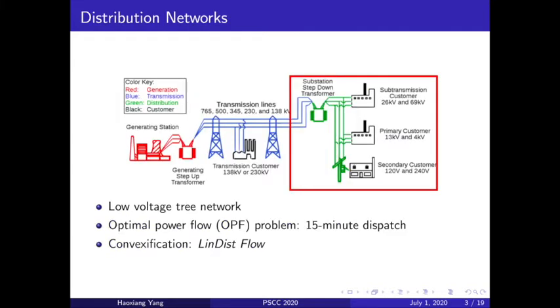Here we illustrate the structure of the electricity power system. Power gets generated from the power plant and then transmitted through high voltage transmission lines, finally gets delivered by low voltage distribution networks to customers. The distribution networks as we show here in the red box has a tree topology and we focus on the optimal power flow problem with a 15 minute decision period. Since the dynamics of power flow is usually non-linear non-convex, we're going to use a LinDistFlow formulation to convexify the mechanism.